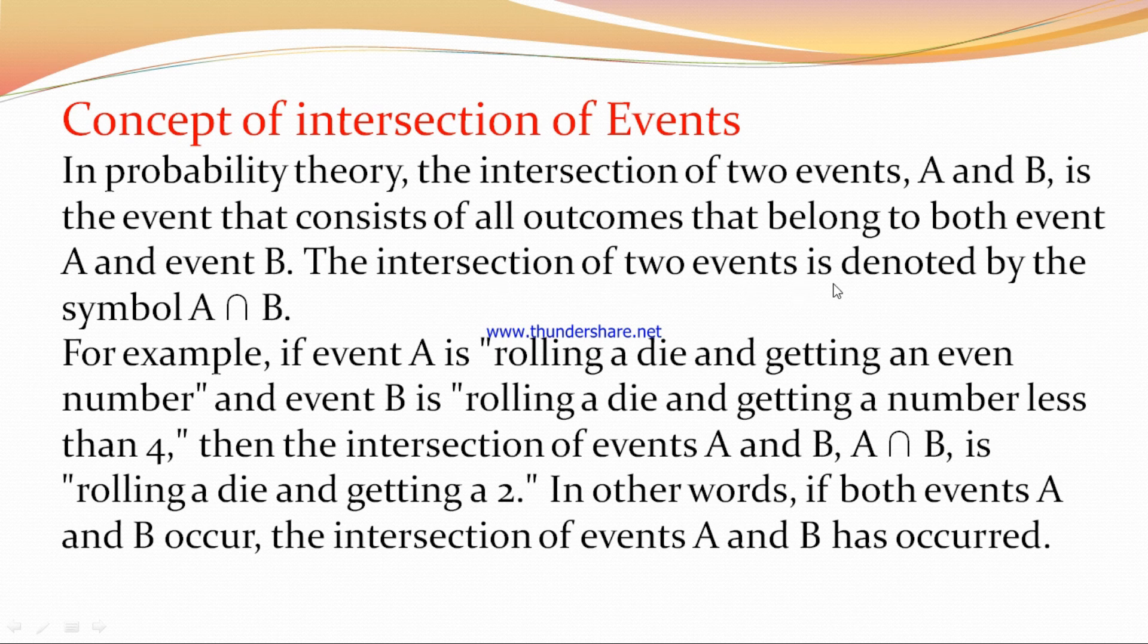The intersection of two events is denoted by the symbol A ∩ B. This is the symbol of intersection.